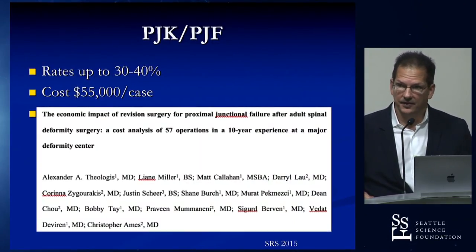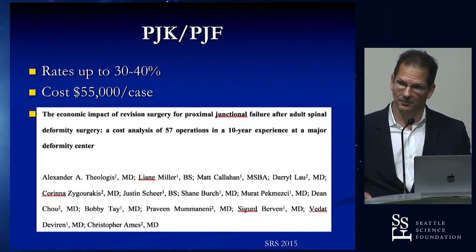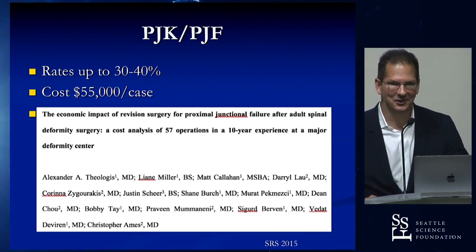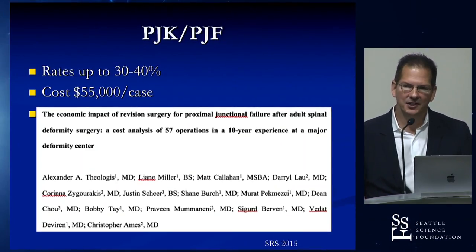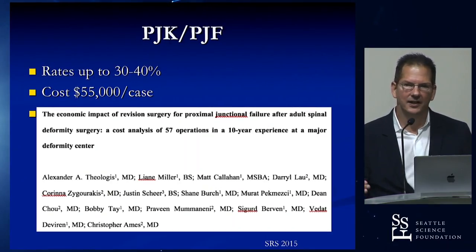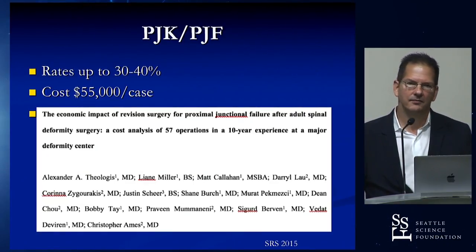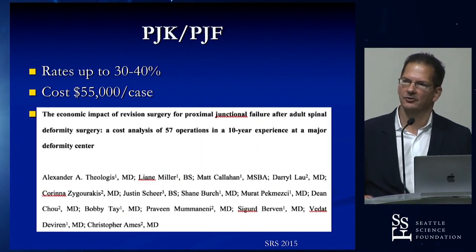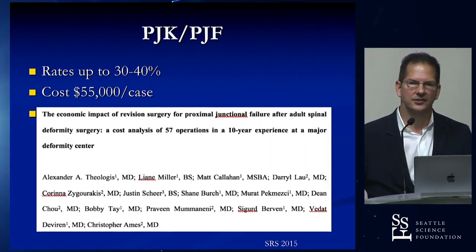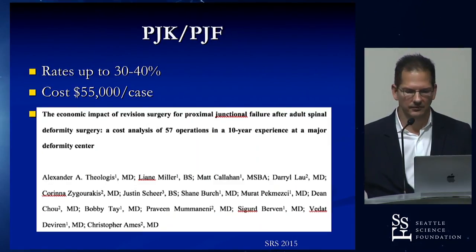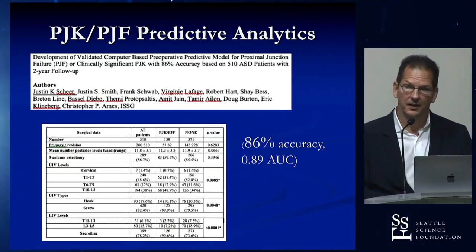If PJF costs $75,000 — actually it's now up to about $75,000 per re-operation — the ability to predict pre-op someone at high risk of PJF means you can apply ligament tethering selectively, or take the risk of vertebroplasty in that patient rather than applying it to everyone. We can target resources and risk more appropriately. We were 86% accurate in predicting PJF pre-op.